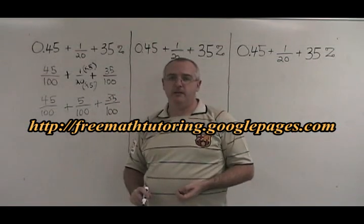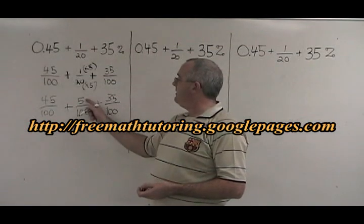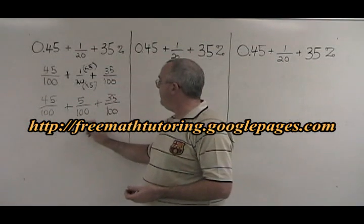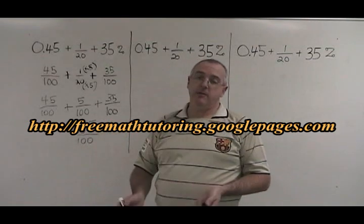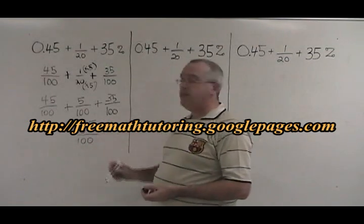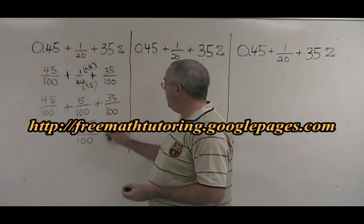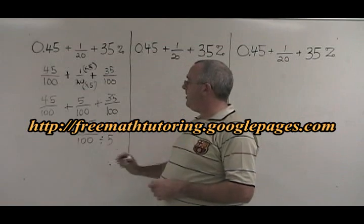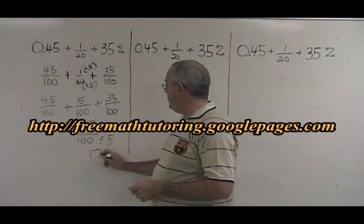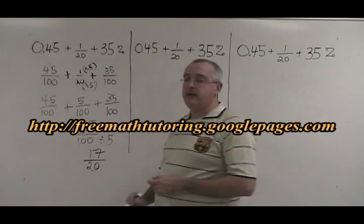Now we can combine them simply. 45 plus 5 is 50, plus 35 is 85. Our answer is 85 over 100. This can be reduced, however. 85 and 100 have a common factor of 5. I divide both top and bottom by 5, and I get 17 over 20 as my answer.